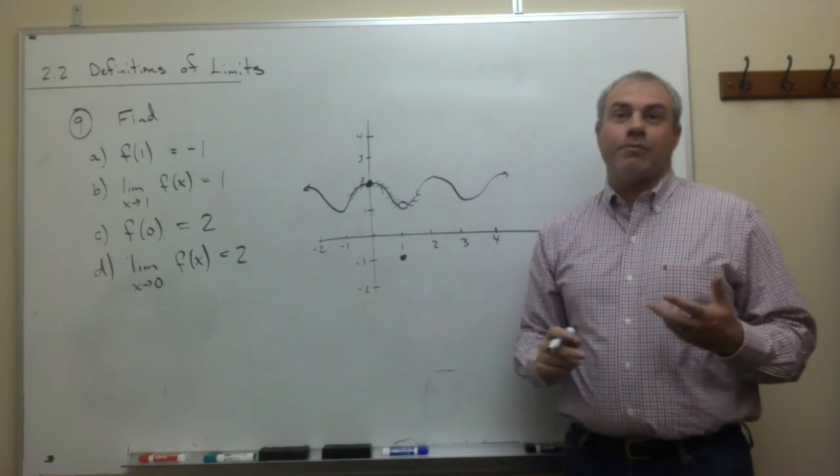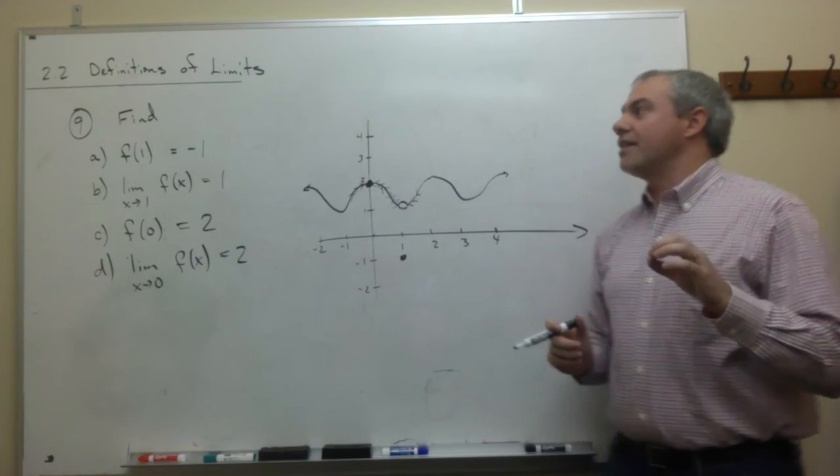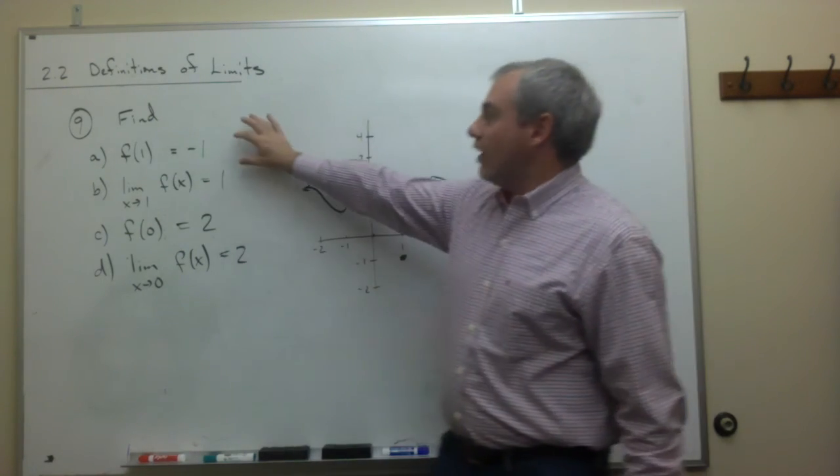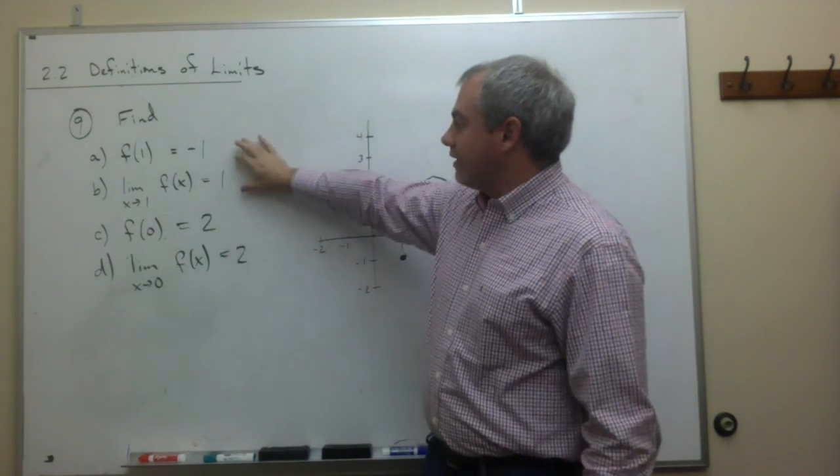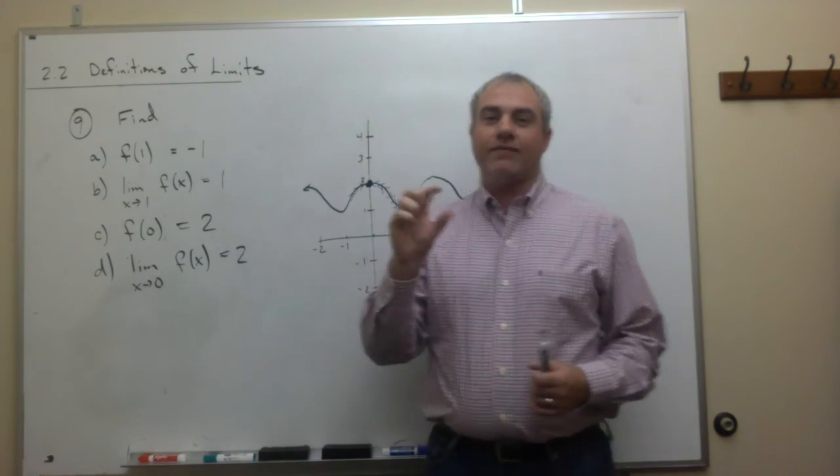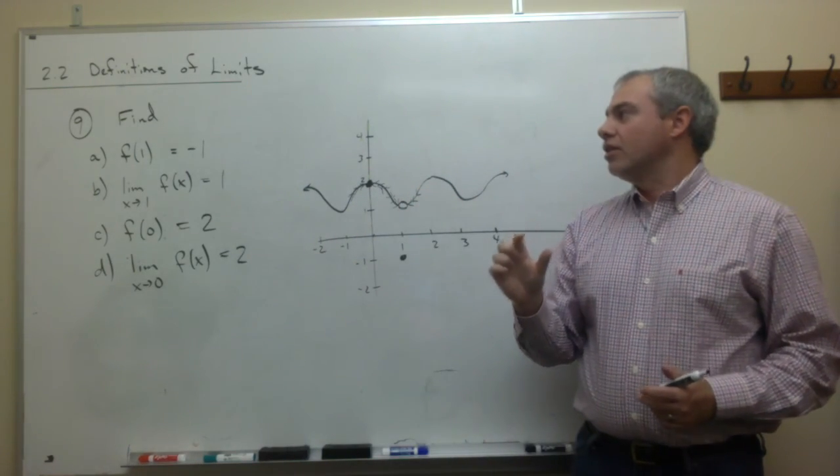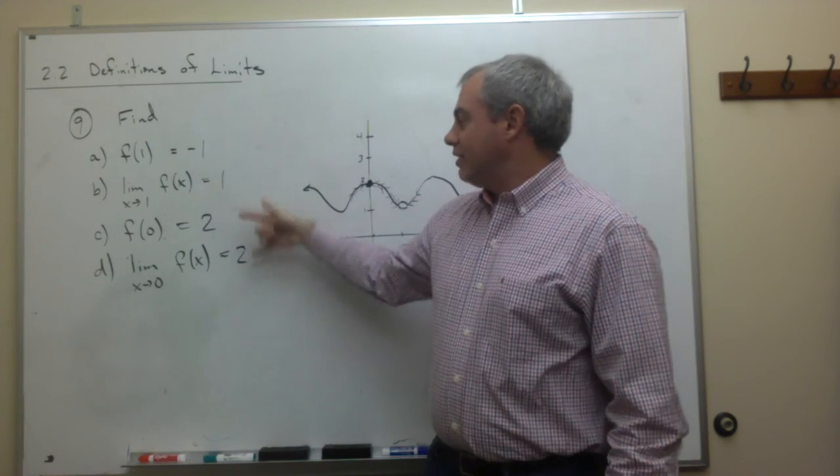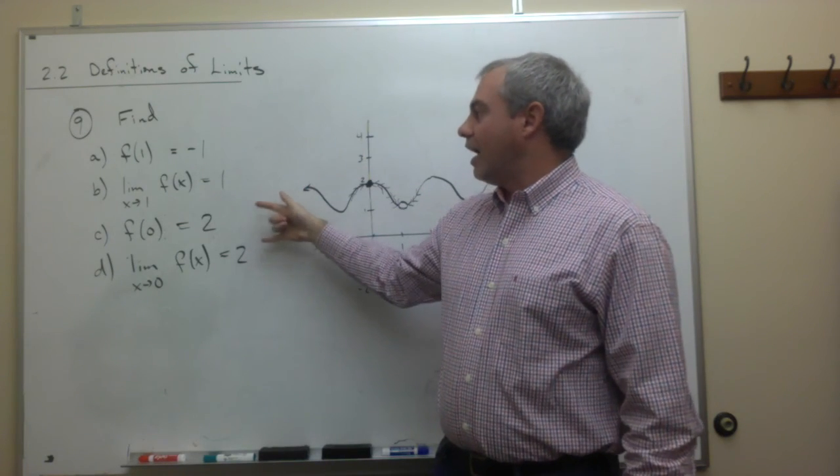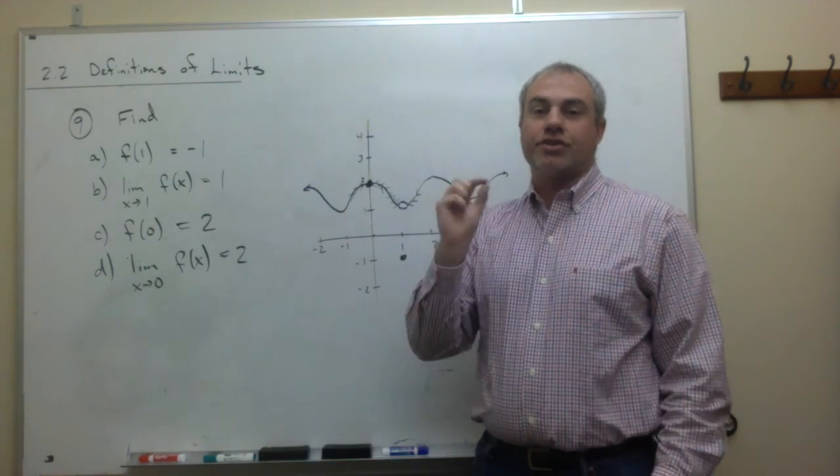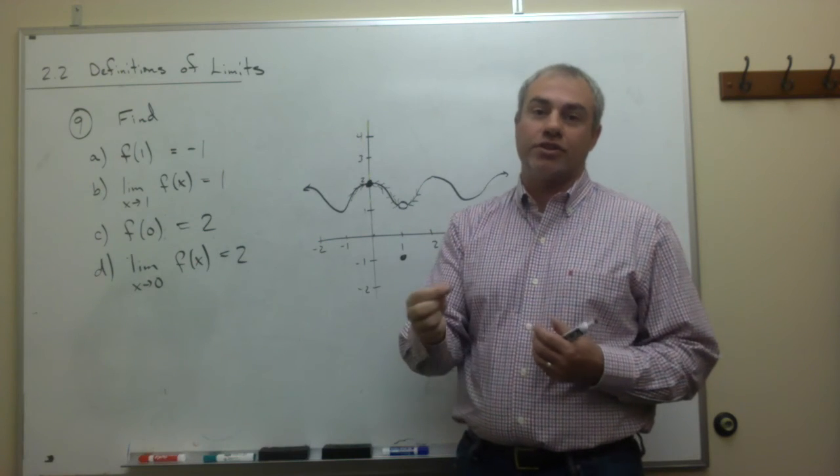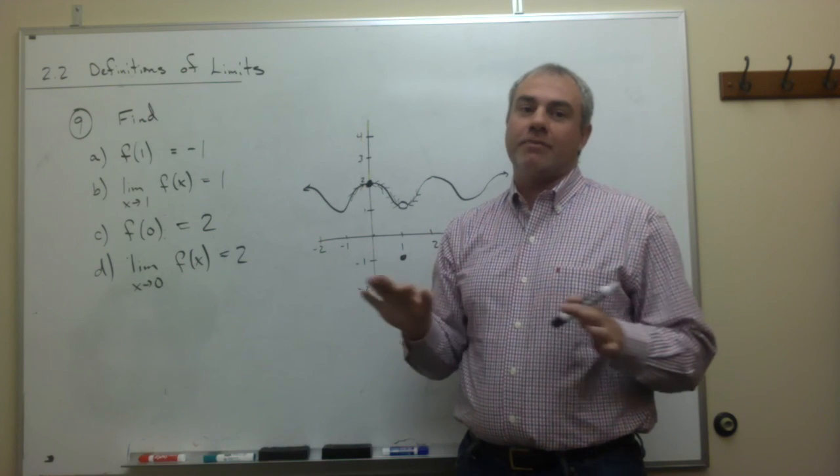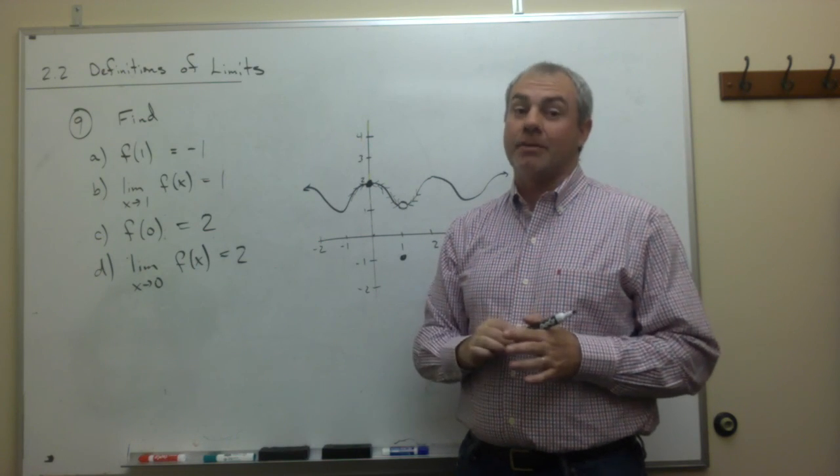These kinds of examples are really important for us to understand that the functional value and the limit value really have nothing to do with each other. They can be different. They can be the same. One is not tied to the other. So just because you know what something's functional value is, it doesn't really mean that you know what its limit value is.